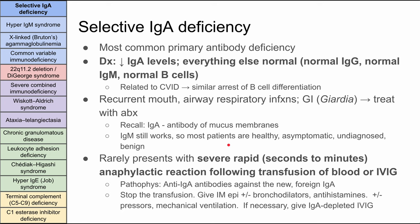IgA is the antibody of the mucous membranes, so it makes sense that these tissues are the ones getting infected. IgM still works, so many patients don't even have symptoms — many patients are healthy, asymptomatic, undiagnosed, and this is benign. Where this does come up is with a rapid severe anaphylactic reaction following transfusion of blood or IV Ig. What's happening is that the person who doesn't have IgA is making anti-IgA antibodies against the new foreign IgA that was just transfused.